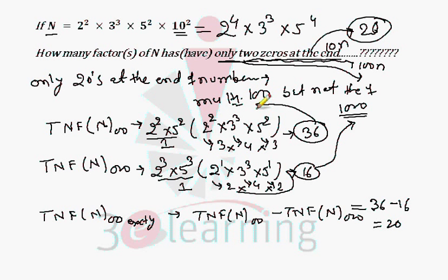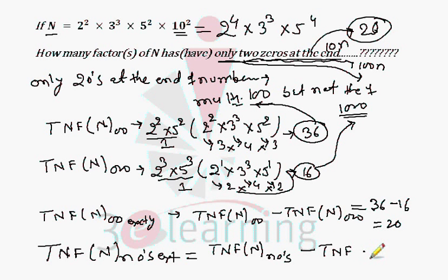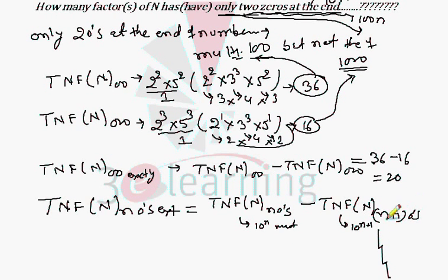To summarize: for exactly two zeros at the end, find the total number of multiples of 100 minus the total number of multiples of 1000. We can generalize this: the total number of factors of any number n having exactly k zeros at the end equals total factors with k zeros minus total factors with k+1 zeros — that is, multiples of 10^k minus multiples of 10^(k+1).